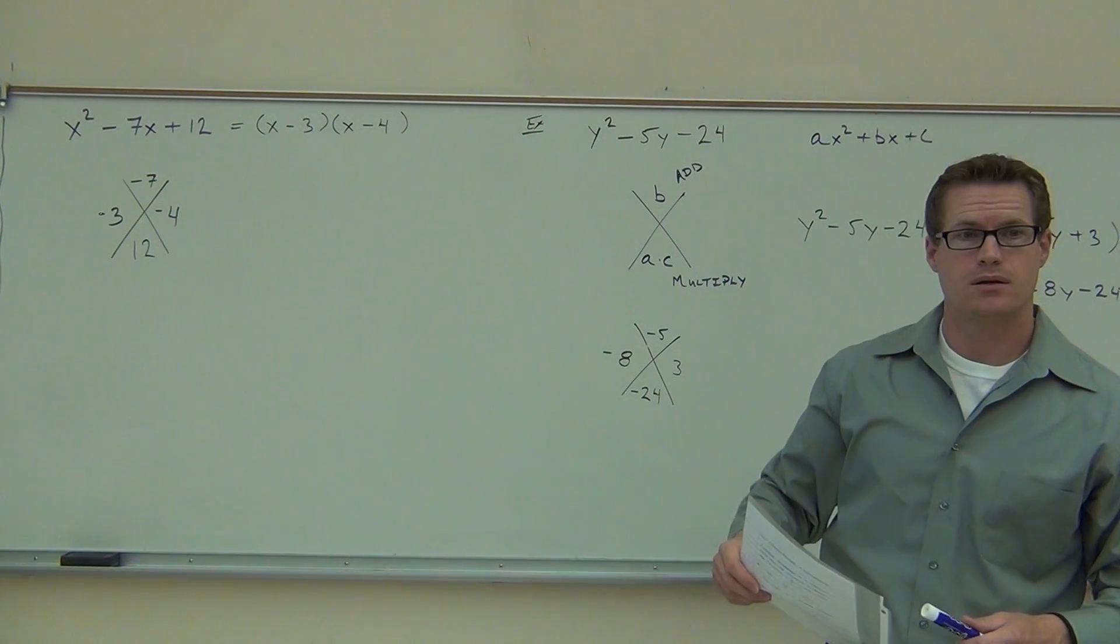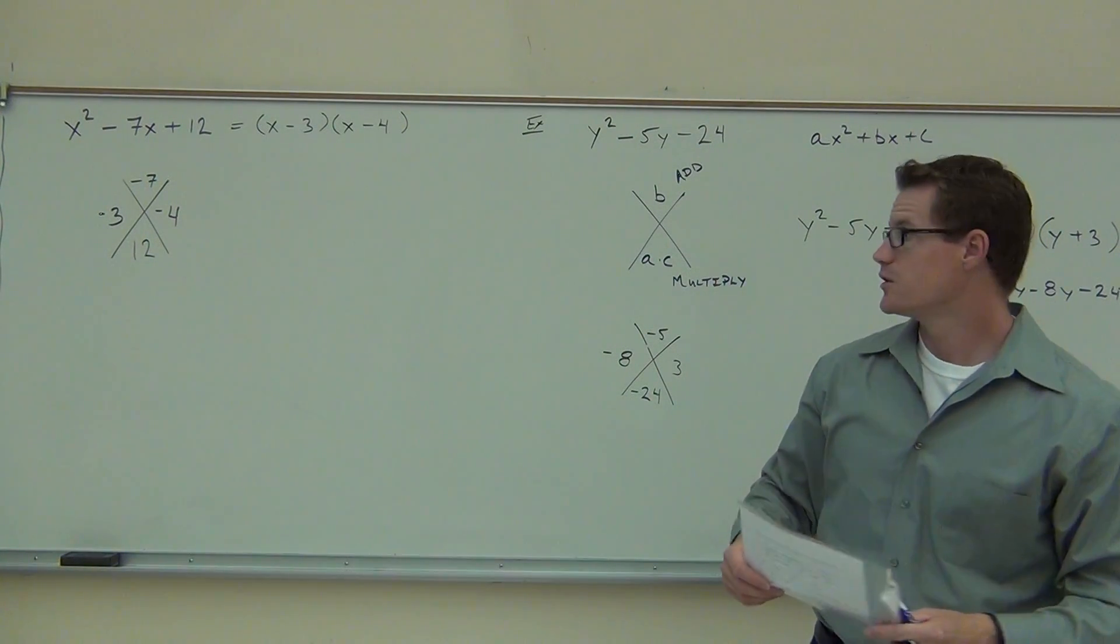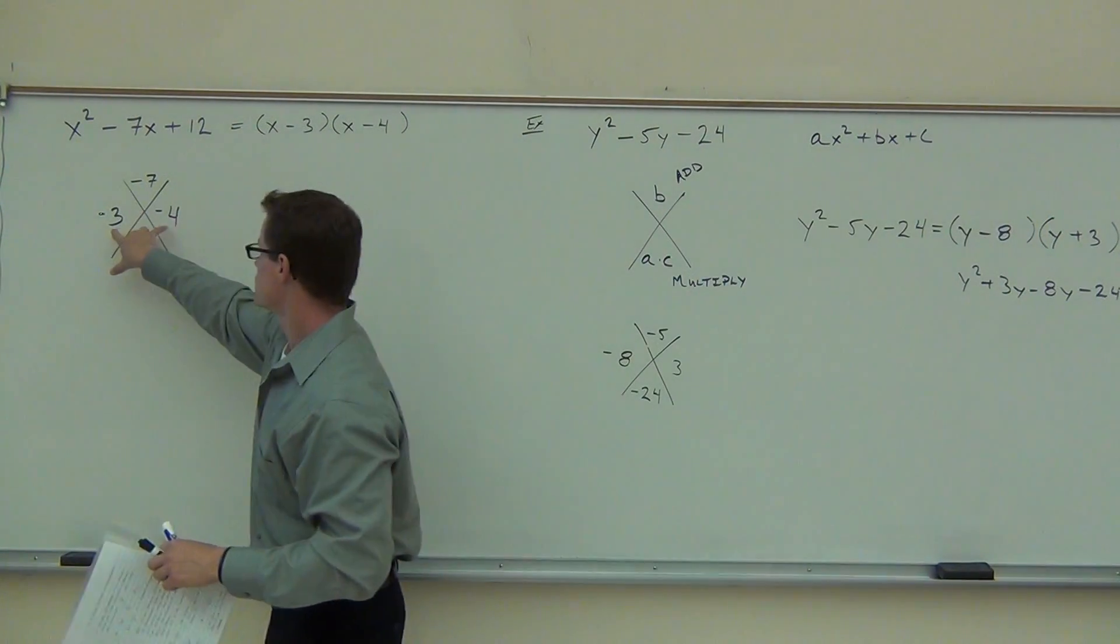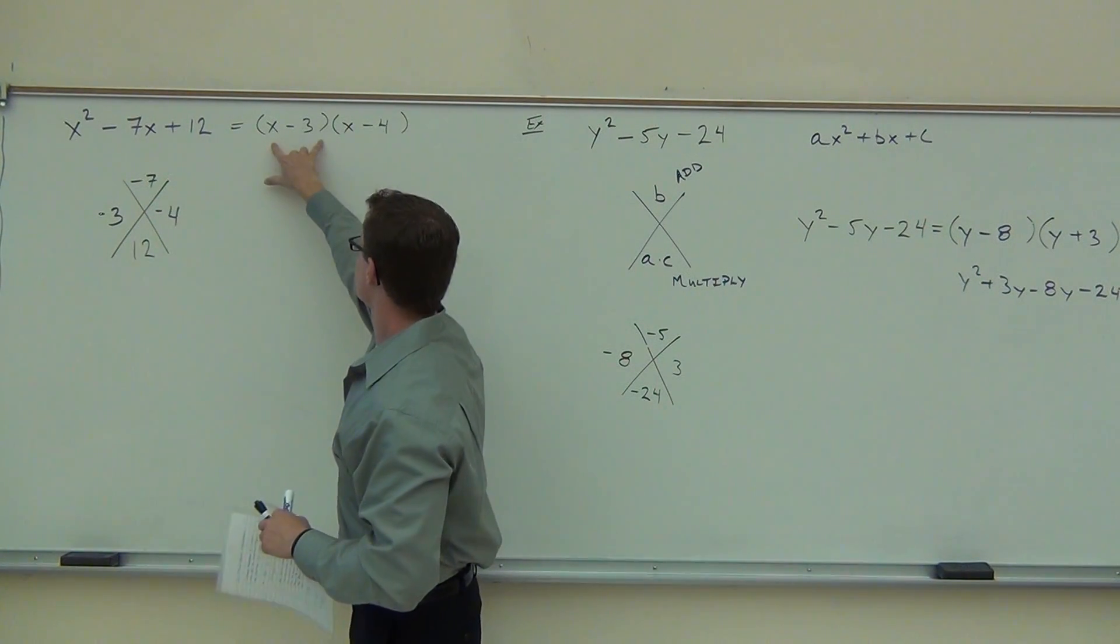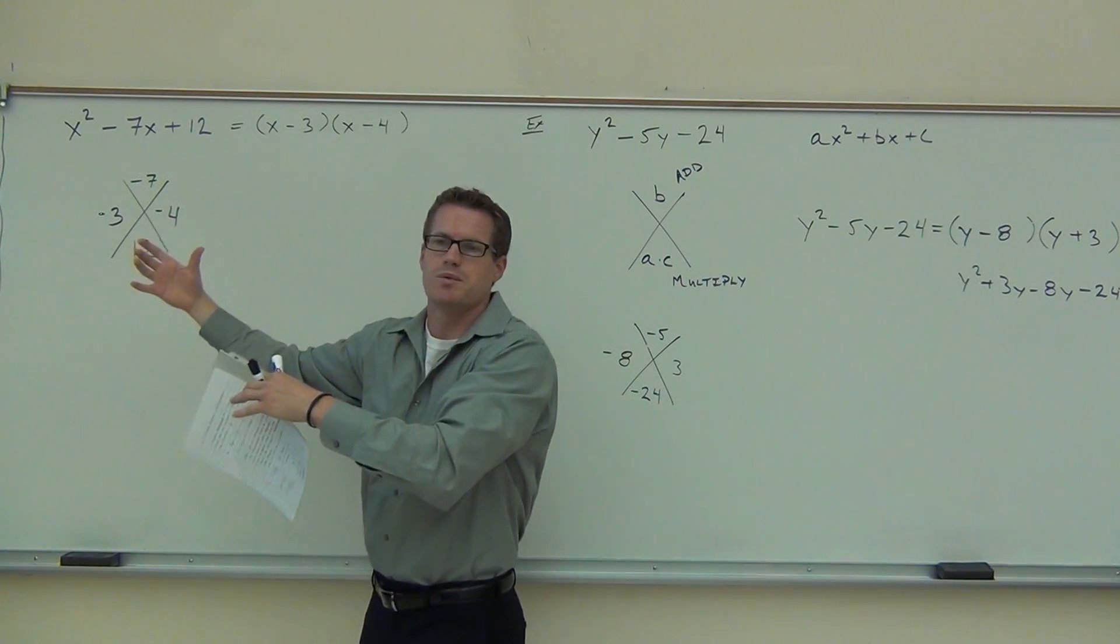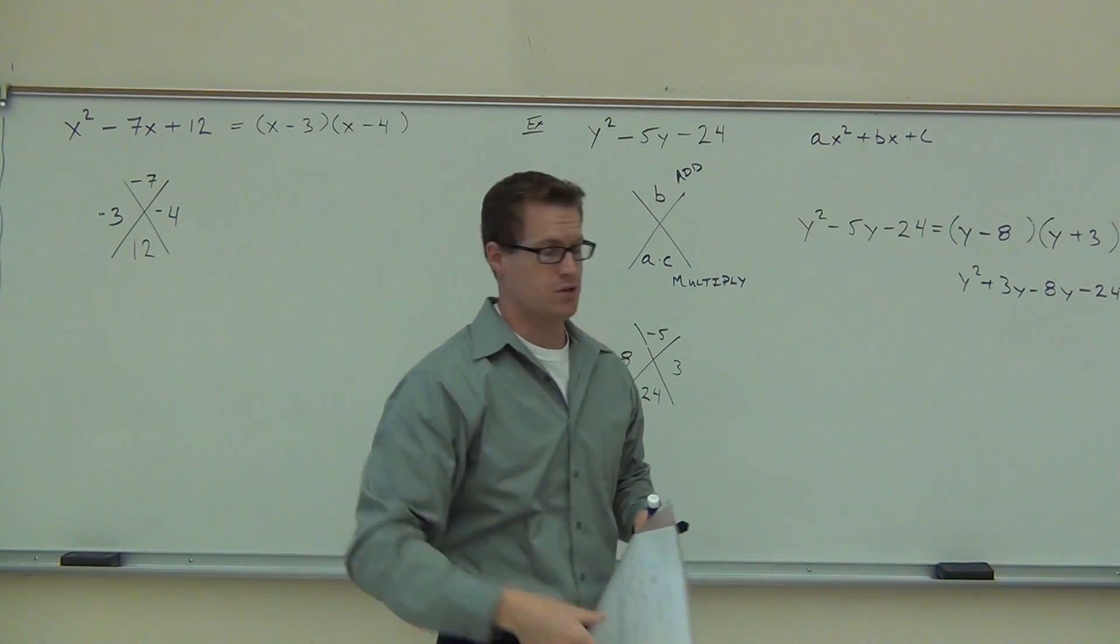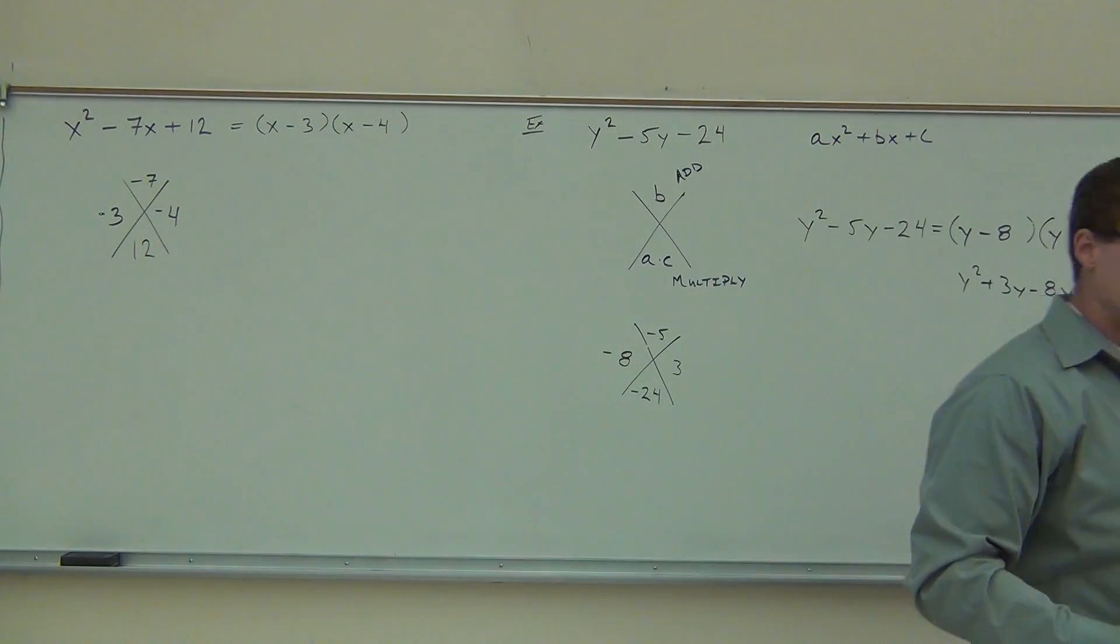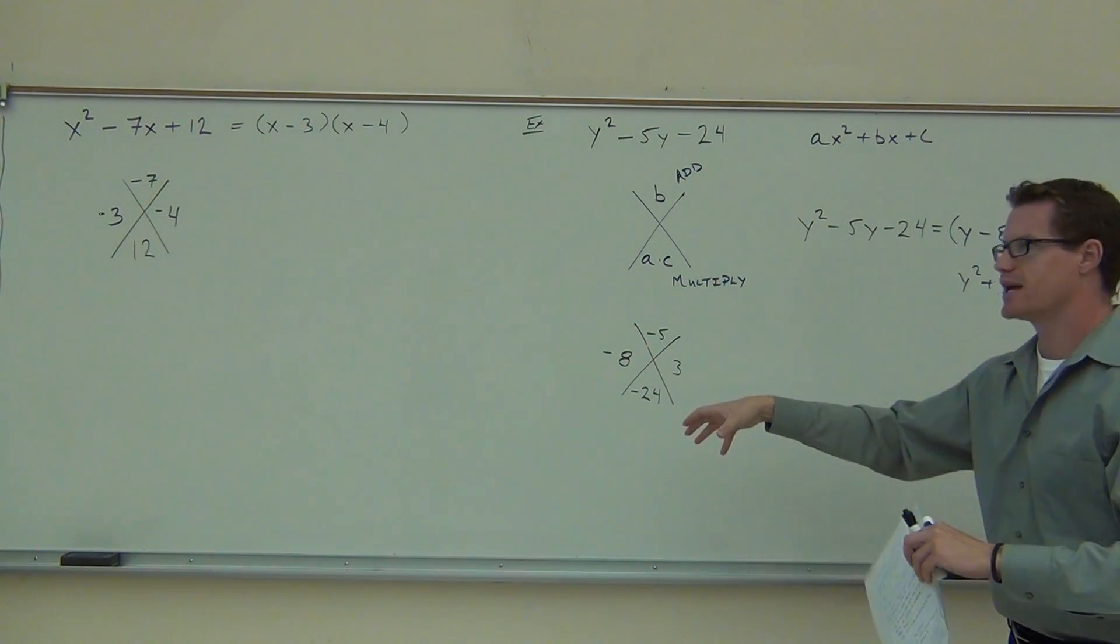Does it matter? I know that it did for the first problem, but does it matter what order the groups go in? You mean these two? It does not matter the order. Because if you switch these around, multiplication is commutative, right? So it really doesn't matter which one we have first. The same thing happens here. If those were backwards, it wouldn't make a difference at all. That's a great question. Thank you for that. So, like I said, I have to show you how to factor by grouping because we're going to use that in the next one.